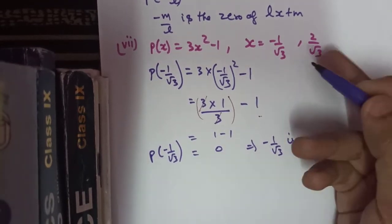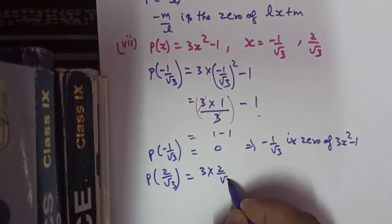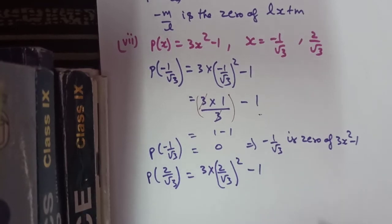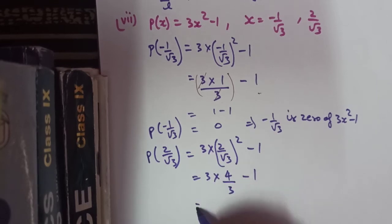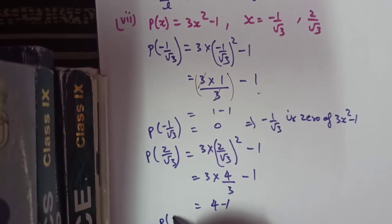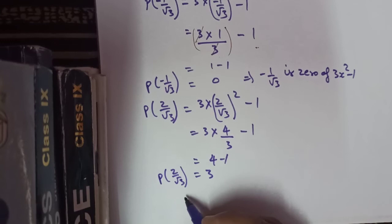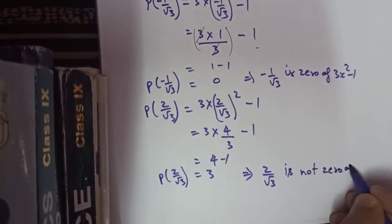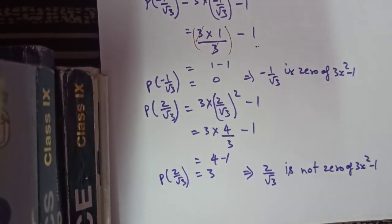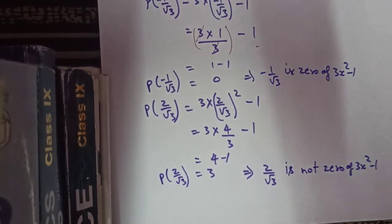Now we check the second value, 2 upon root 3. Substituting x as 2 upon root 3: 3 times square of 2 is 4, divided by square of root 3 which is 3, minus 1. The 3 and 3 cancel, giving 4 minus 1 equals 3. Since p(2 upon root 3) equals 3, which is not equal to 0, we say that 2 upon root 3 is not the zero of 3x squared minus 1.